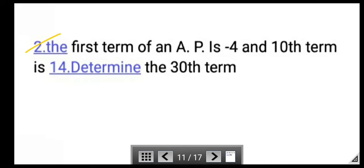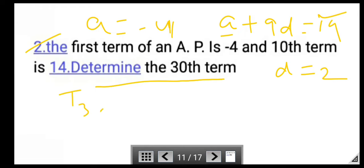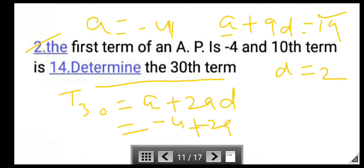Next question: The first term of an A.P. is −4, and the tenth term is 14. So a = −4, and t_10 means a + 9d = 14. Putting a = −4, we get d = 2. Now find the thirtieth term: T_30 = a + 29d = −4 + 29(2) = 54.